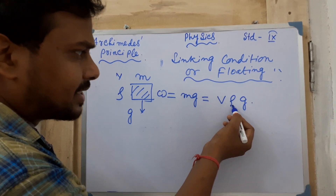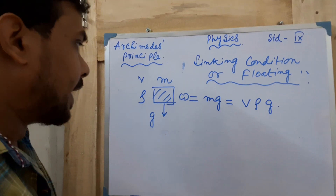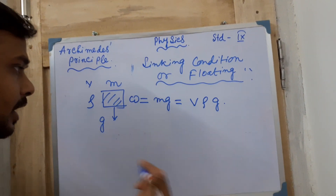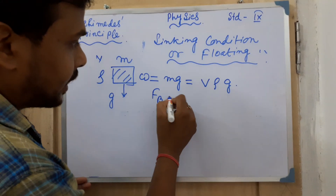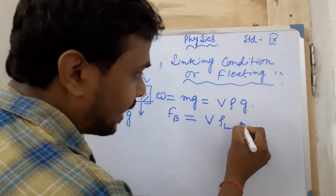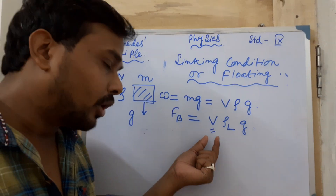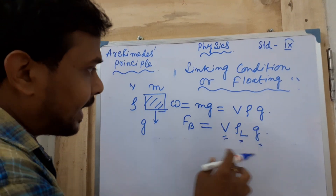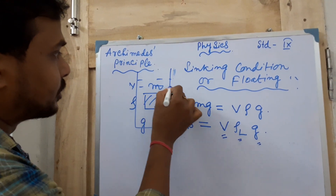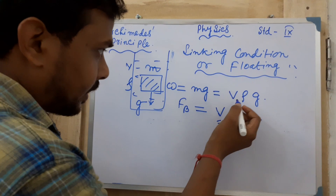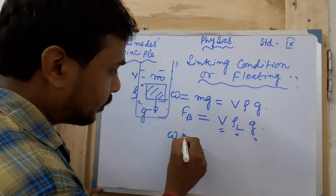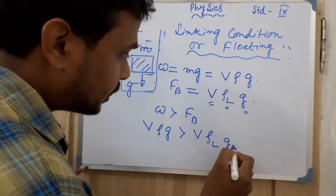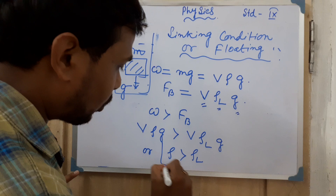The upthrust FB can be written as V×ρL×g, where V is the volume of liquid displaced, ρL is the density of the liquid, and g is gravity. When comparing, if W is greater than FB, then V×ρ×g > V×ρL×g, which simply means ρ > ρL — the density of the body is greater than the density of the liquid.